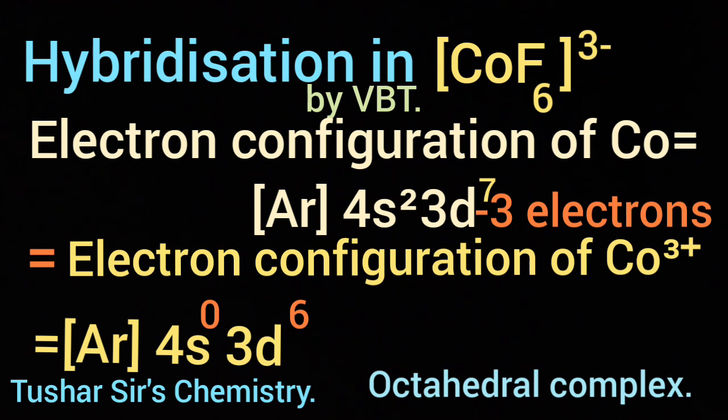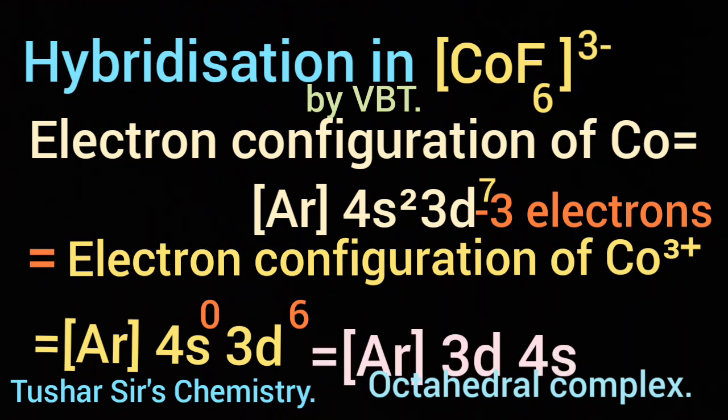Then the 3d subshell will be written first, 4s will be written after 3d. Then the electron configuration of Co³⁺ will be [Ar] 3d⁶ 4s⁰, or you can say Co³⁺ is 3d⁶ 4s⁰. After 4s, 4p will be there and 4d will be there.